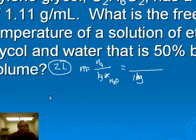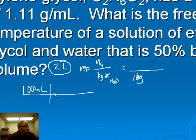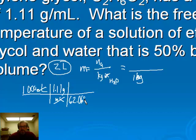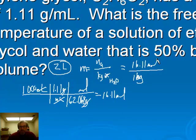We'll do that with density. We know we have 1,000 milliliters, or a liter, and we know the density of this stuff is 1.11 grams per milliliter, so that tells us how many grams are in the liter. Then we need molar mass. The molar mass of ethylene glycol is 62.068 grams per mole. So now we know how many moles of ethylene glycol are in a liter: 16.11 moles. That gives us a molality of 16.11 molal.